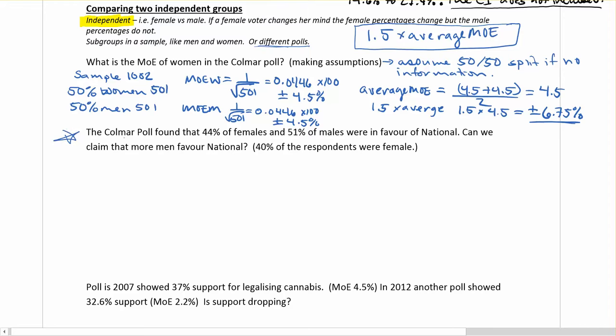So I've just made this up, but if we assume that the Colmar poll found that 44% of females and 51% of males were in favor of national, can we claim that more men favor national? Because looking at that, 51% looks like more men, right? So I'm going to give you some information here, and this is not directly from the poll, I'm just making it up but using the same context.